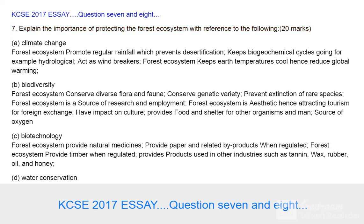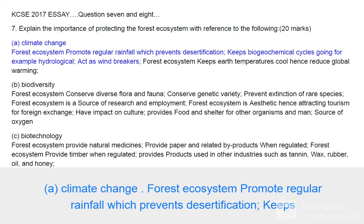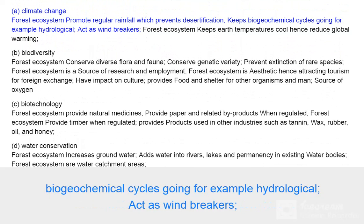2017 essay question 7 and 8. Question 7: Explain the importance of protecting the forest ecosystem, with reference to the following. 20 marks. (a) Climate change: forest ecosystems promote regular rainfall, which prevents desertification and keeps biogeochemical cycles going, for example the hydrological cycle.